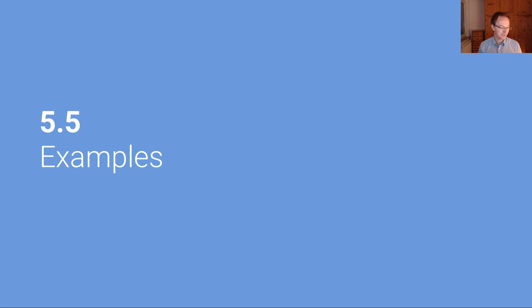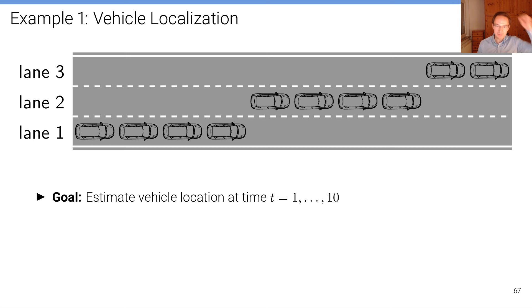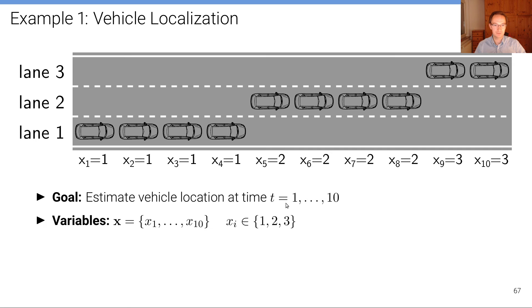So the first example I want to show you is this vehicle localization example that I've already alluded to in the first part. The goal here now, at a bit longer time horizon, is to estimate the vehicle location at 10 different time instances. These are the time instances from left to right, t equals 1 to 10, where the state of each of these random variables—we have one random variable at each time step—these are ternary variables, so they can take three different states: lane 1, lane 2, or lane 3.